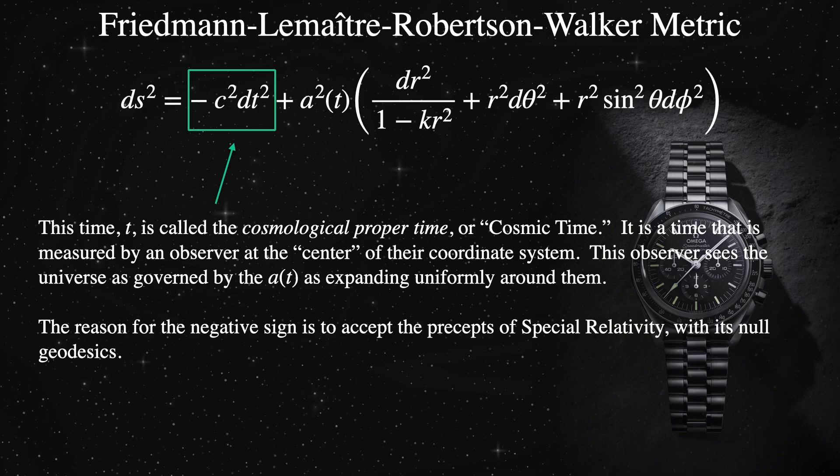Also, the cosmic time is isotropic. As we look back in time, the farther out in space we look, the farther back in time we look. And this look back time is 100% the same in all directions.